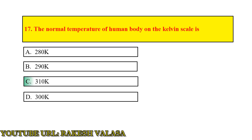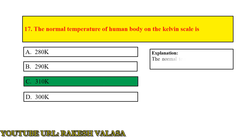Question number 17: the normal temperature of the human body on the Kelvin scale is — answer: 310 Kelvin. Explanation: the normal temperature of a human being is 310 Kelvin, or 37 degrees centigrade.